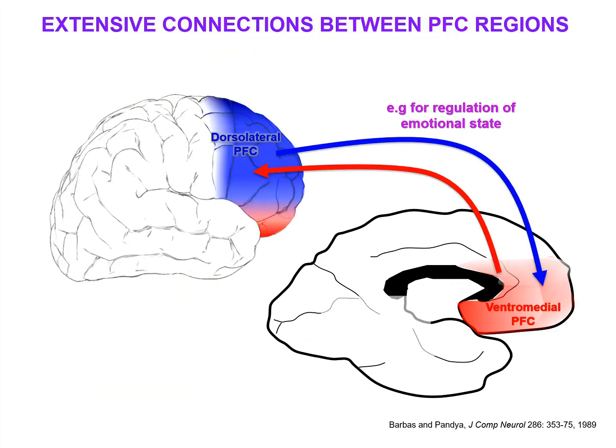And of course, there are many connections between the dorsolateral prefrontal and the ventromedial or orbital aspects of prefrontal cortex — for example, for emotions to influence our actions and for top-down regulation of our emotional state.